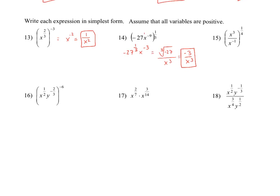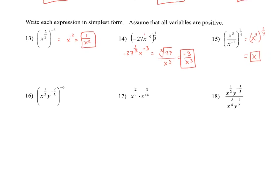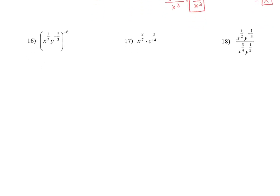Number 15, we've got some negative exponents and some fractional exponents. I'm going to clean up inside the parentheses first before applying the fractional exponent. The x to the negative 1 will come up to the numerator and be multiplied by x to the third, giving me x to the fourth. That quantity is raised to the 1/4 power, and when we apply the power to a power rule, we get x to the first, or x. Number 16, we're going to apply the exponent of negative 6 to all expressions inside the parentheses. We'll get x to the negative 6/2, or negative 3, and y to the positive 12/3, or y to the fourth. Cleaning up the negative exponent gives us y to the fourth over x to the third.